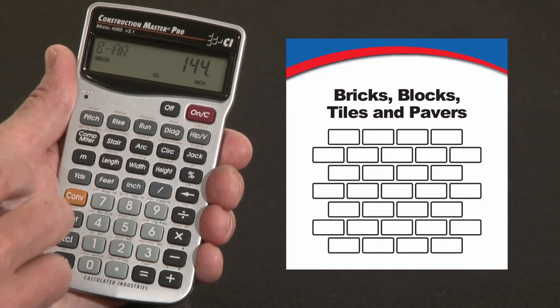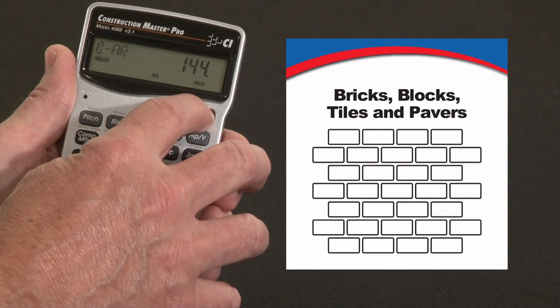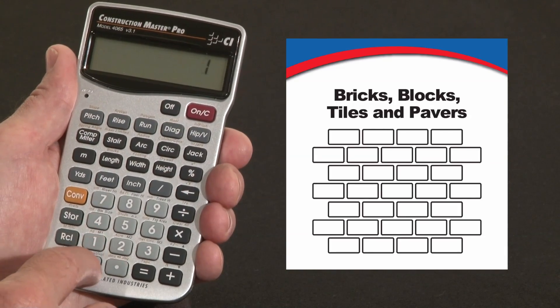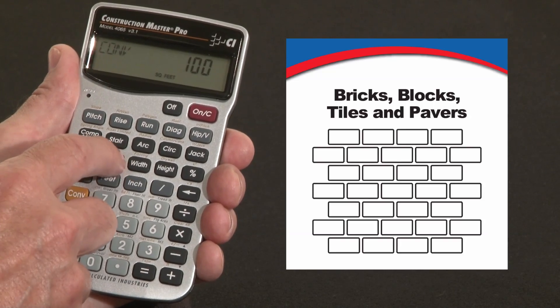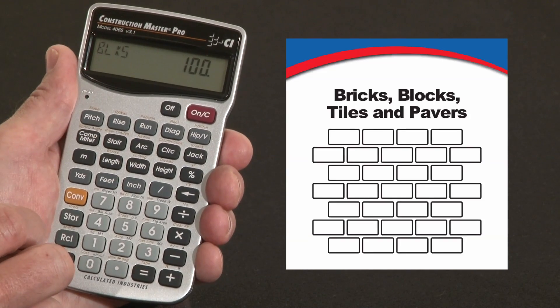So block area is now 144 square inches. It's a 1 foot by 1 foot tile. So now I've got 100 square feet. Convert that to blocks, and it better come out to be 100 blocks, sure enough.